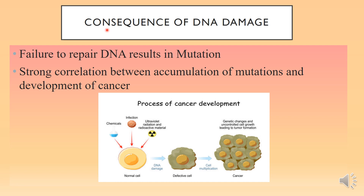The consequences of DNA damage: failure to repair DNA errors or damage results in mutations. As mutations accumulate and are passed from one generation to the next generation of cells, there is a strong correlation between accumulation of mutations and development of cancers. A normal cell can become defective as these mutations accumulate, are transmitted to the next generation, and may lead to cancer.